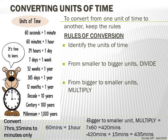We are converting from a bigger unit — hours — to a smaller unit — minutes — so we multiply. 7 multiplied by 60 equals 420 minutes. The 15 minutes is already in minutes, so we simply add it to the converted 7 hours: 420 plus 15 gives 435 minutes. It's quite easy!